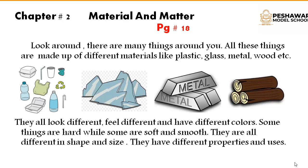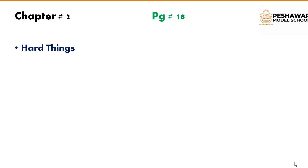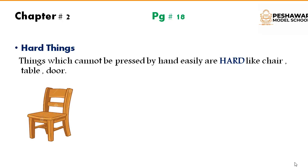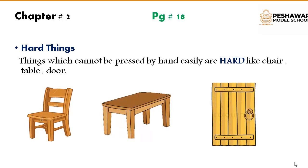In this chapter we will discuss different types of materials and their properties. The first one is hard things. Things which cannot be pressed by hand easily are hard — like chair, table, and door. These are called hard things. For example, we cannot break the chair with our hand because the chair is made up of wood, and wood is a hard material.